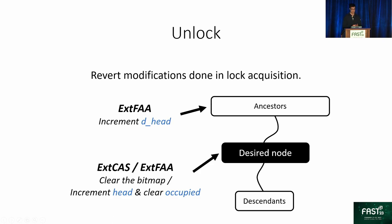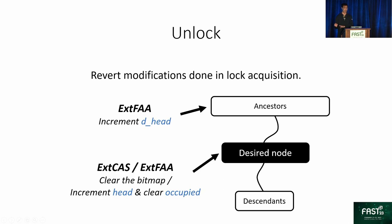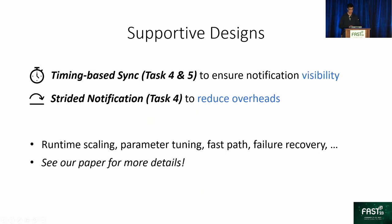Now we have discussed the lock procedure. The unlock procedure is straightforward — it reverts the modifications made when acquiring the lock. Because we entered the lock queue of the desired node and the descendant queues of its ancestors, we quit these queues by incrementing their head counters. We also clear the occupied flags and unset the related bits in the bitmap of leaf nodes. To ensure correctness and performance, we have several important designs including timing-based synchronization and a stride notification mechanism, plus supportive designs such as runtime scaling and parameter tuning. Please refer to our paper for more details.